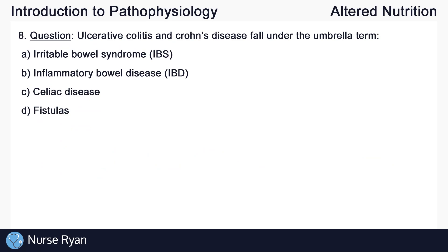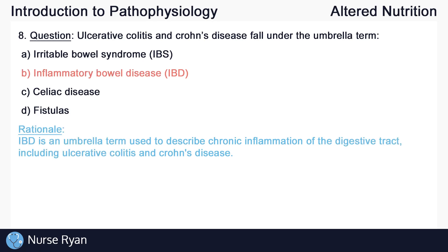For the last question of this quiz, number eight: ulcerative colitis and Crohn's disease fall under the umbrella term — the answer is B, inflammatory bowel disease or IBD. IBD is an umbrella term used to describe chronic inflammation of the digestive tract, including ulcerative colitis and Crohn's disease.